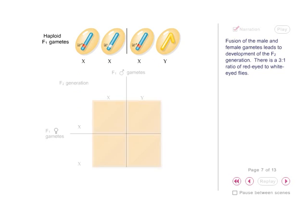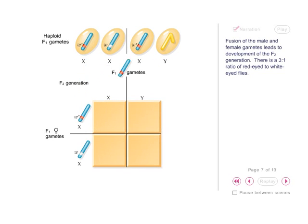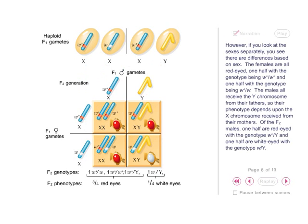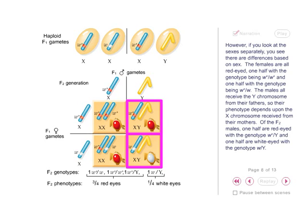Fusion of the male and female gametes leads to development of the F2 generation. There is a three-to-one ratio of red-eyed to white-eyed flies. However, if you look at the sexes separately, you see there are differences based on sex. The females are all red-eyed: one half with the genotype W+, W+, and one half with the genotype W+, W. The males all receive the Y chromosome from their fathers, so their phenotype depends upon the X chromosome received from their mothers. Of the F2 males, one half are red-eyed with the genotype W+, Y, and one half are white-eyed with the genotype W, Y.